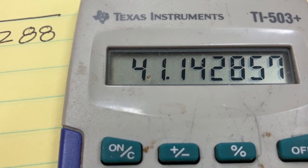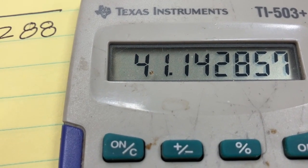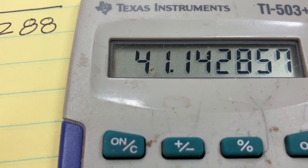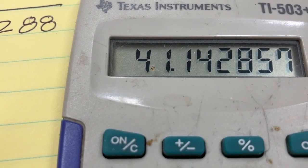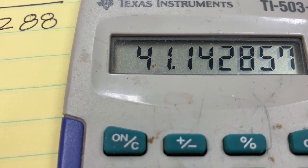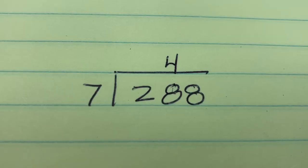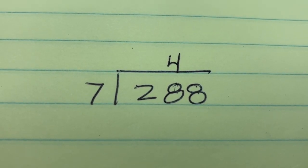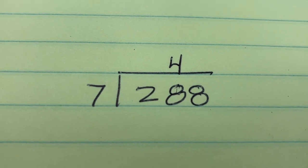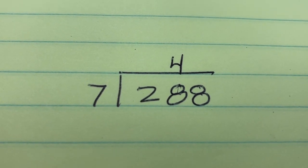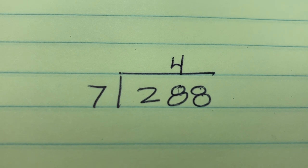Well, as it turns out, 288 divided by 7 is 41 point something or other. We don't care. What we're interested in is the 4. Let's do that number first. So we knew that 7 wouldn't go into 2, so we knew the 4 belonged over the first 8. So that's what we know so far.